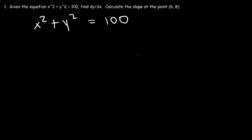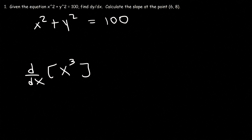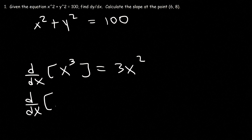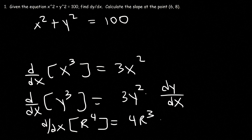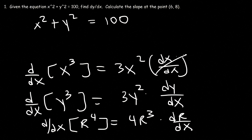Let's go over a few things. If you differentiate x cubed with respect to x, the answer is 3x squared. But if you differentiate y cubed with respect to x, it's going to be 3y squared times dy/dx. And if you differentiate r to the fourth power with respect to x, it's going to be 4r cubed times dr/dx. For this example, dx over dx will cancel, so there's no point in writing it.